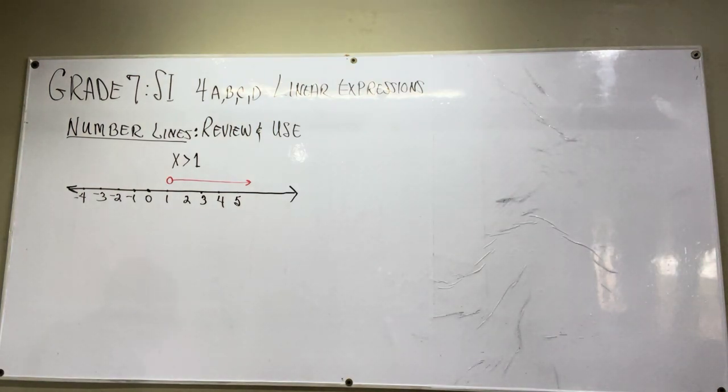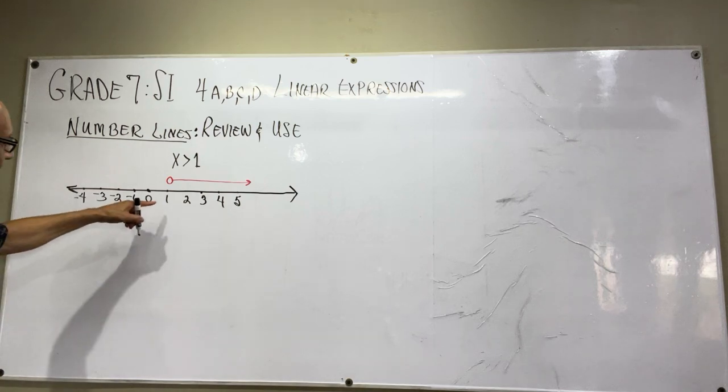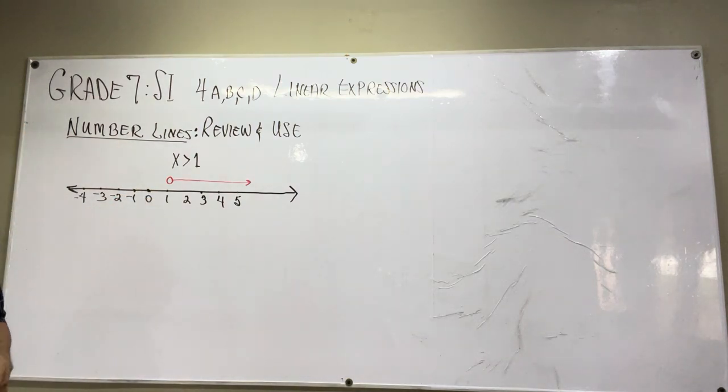Why do I say that? Because the point zero here has an open circle, which means one is not counted. So it doesn't include one, so it's bigger than one.